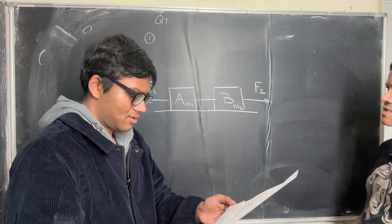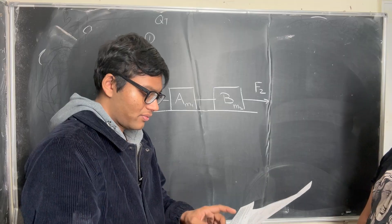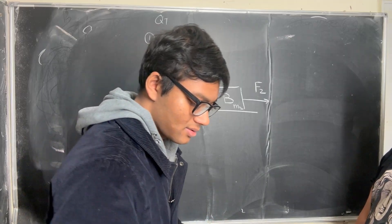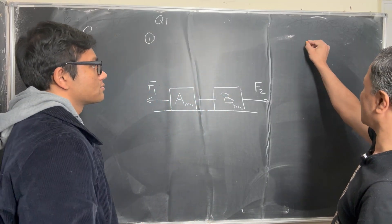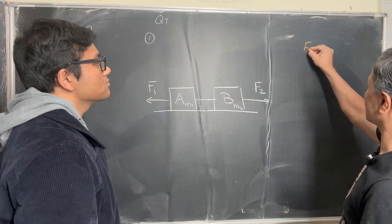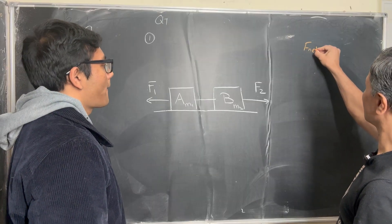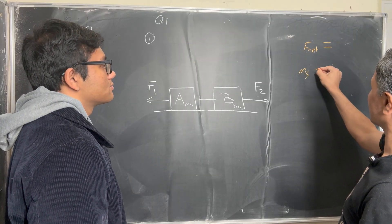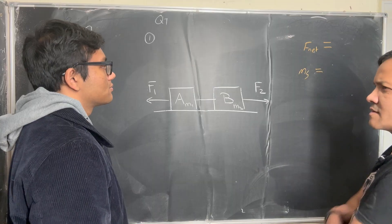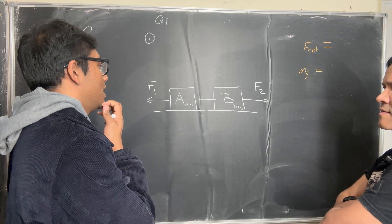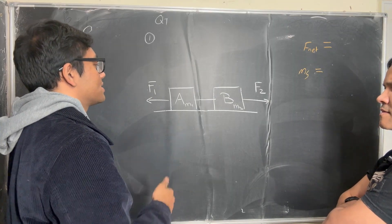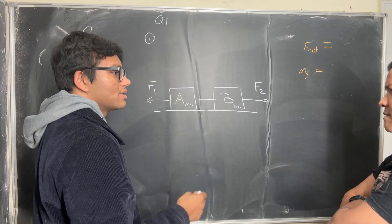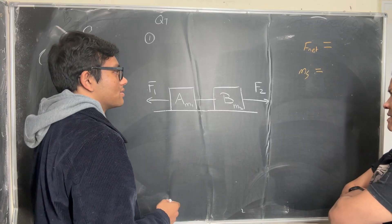Find the acceleration. That means you're going to find F_net. What is F_net and what is M_system? M_system is just M_A plus M_B — M1 plus M2.